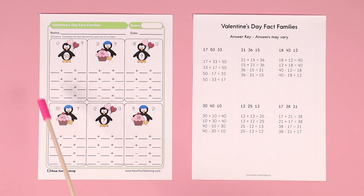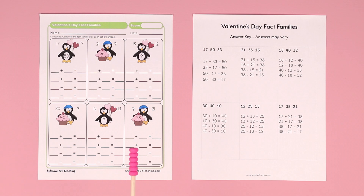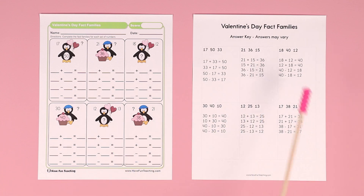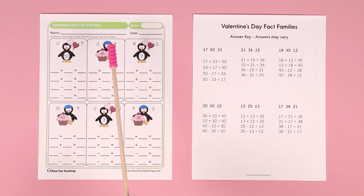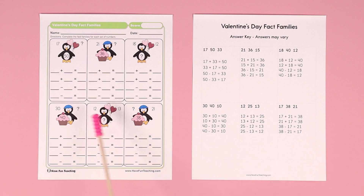When you have all those together, that's called a fact family. This is a fun activity for Valentine's Day. The answer key is included, and students need to find the missing number and then fill in the fact family.